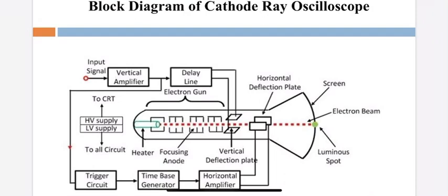First we will discuss the vertical deflection system. The first block is the vertical amplifier, which receives input from the signal to be measured, and then amplifies it. The signal to be measured is applied to the vertical amplifier, amplified, and the output voltage is then applied to the vertical deflection plates.